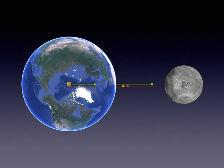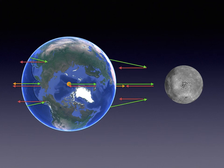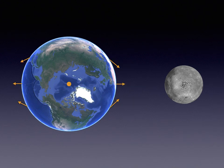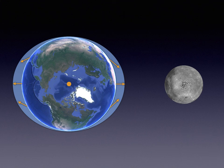Now let's consider the location on the opposite side of the Earth, furthest from the Moon. Here the Moon's gravity is weaker than it is at the center of the Earth because the distance to the Moon is greater. When we add the force of acceleration, the force again points away from the surface of the Earth. If we repeat this for a few other locations on the Earth's surface, we see the direction and magnitude of the tidal force. This nicely explains why we have two tidal bulges located toward and away from the Moon.